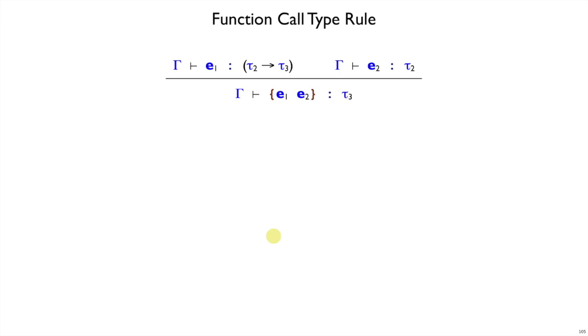Here is the general rule then. If you've got an application of E1 applied to E2, and you get a type for E1, it has to be an arrow type. It can be any tau2 and tau3, any argument and result types, as long as E2 also has a type, and it has type tau2, which is the same type as the left-hand side of the arrow. In that case, the tau3 from the right-hand side of the arrow, that is the type of the argument of the application expression.